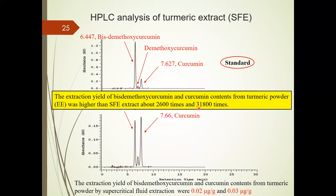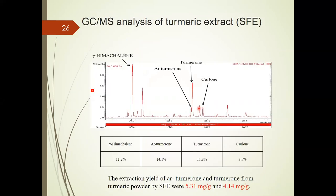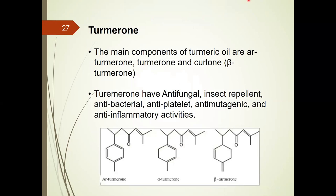We then wanted to identify the major components in the SFE extract. We used GC-MS to analyze the turmeric extract from SFE and identified the main components as aromatic turmerone, turmerone, and curlone. The extraction yield of aromatic turmerone and turmerone from the SFE extract were 5.31 mg/g and 4.14 mg/g, respectively. From the literature, the major components of turmeric oil are aromatic turmerone, turmerone, and curlone, which is also called beta-turmerone.